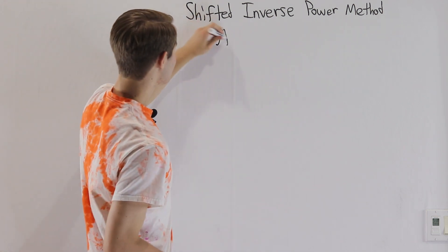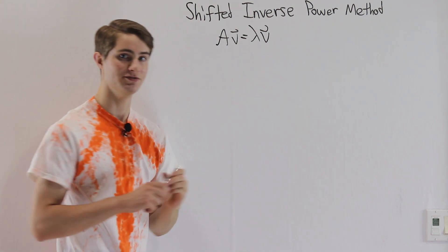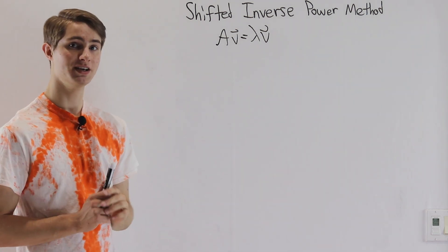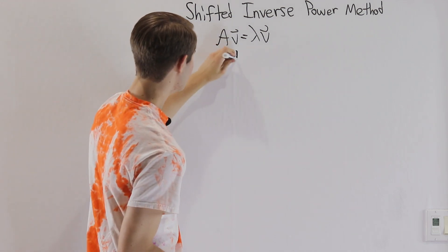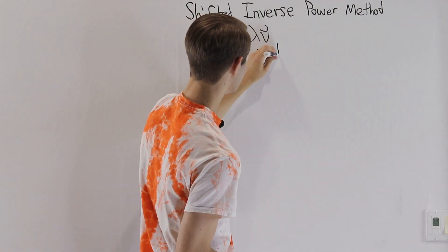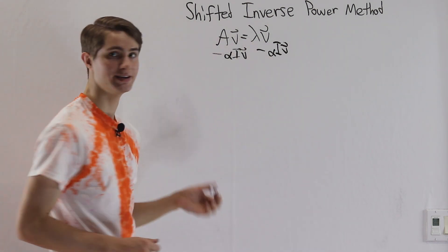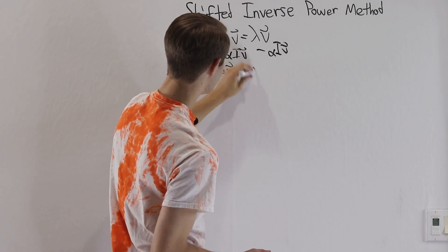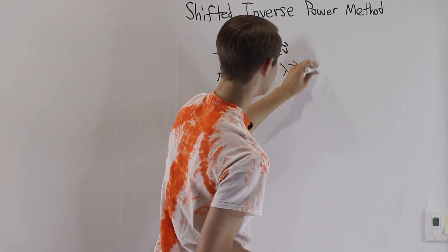Let's start out by using the definition of an eigenvector. We know that Av equals lambda v. This will look a little confusing at the beginning, but we'll see why we're doing all this in a second. I'm going to subtract alpha I v on both sides, where alpha is just some number and I is the identity matrix. So Av minus alpha I v equals lambda v minus alpha I v.